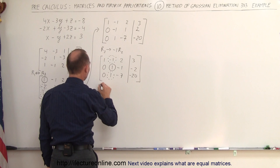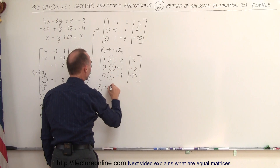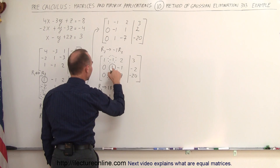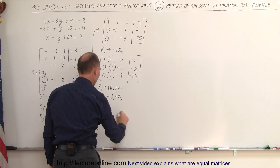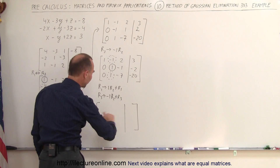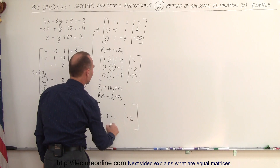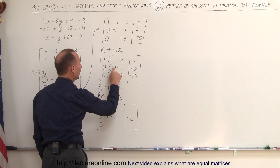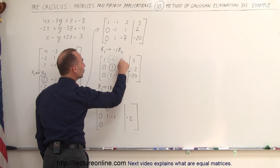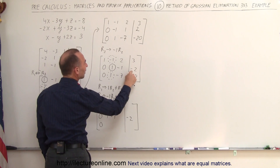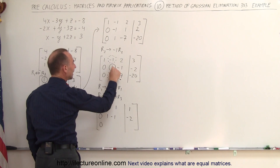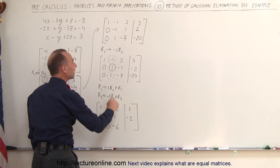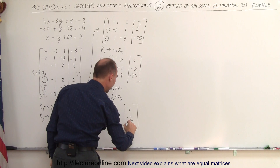We take the first row and replace it by positive 1 times the second row added to the first row. We take the third row and replace it by negative 1 times the second row added to the third row. The second row doesn't change: 0, 1, negative 1, negative 2. For the first row: 1 times negative 1 added to 2 is positive 1; 1 times negative 2 added to 3 is positive 1. For the third row: negative 1 times negative 1 is positive 1, added to negative 7 gives negative 6; negative 1 times negative 2 is positive 2, added to negative 20 gives negative 18.